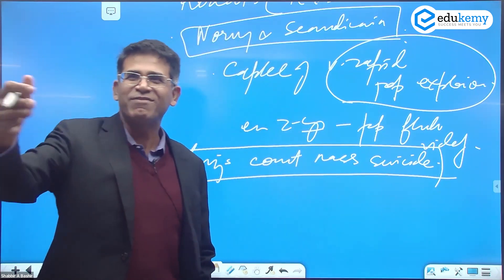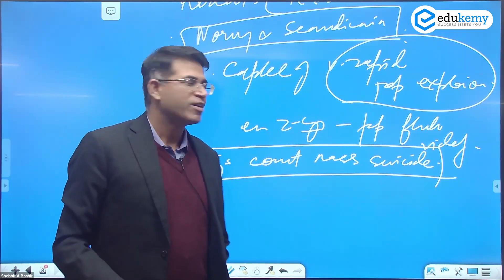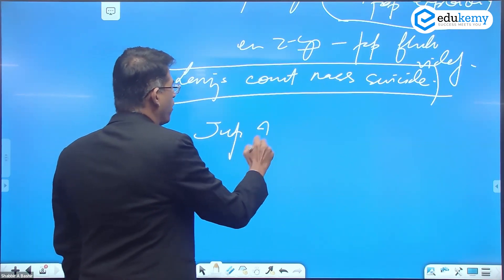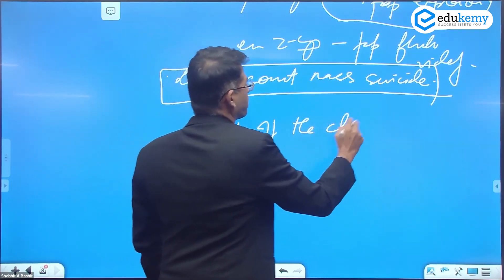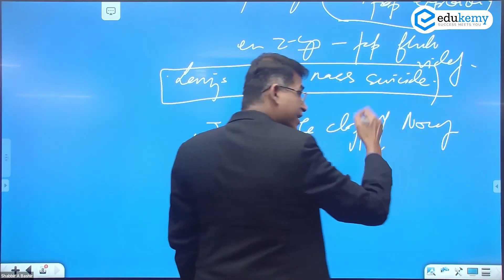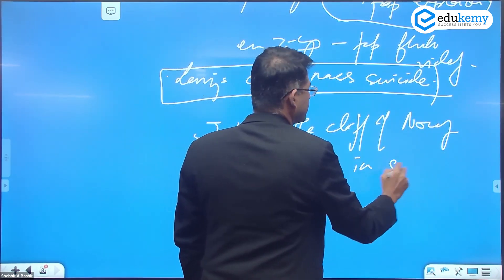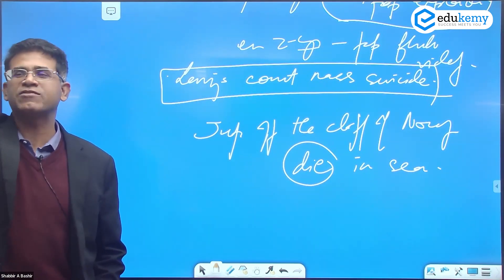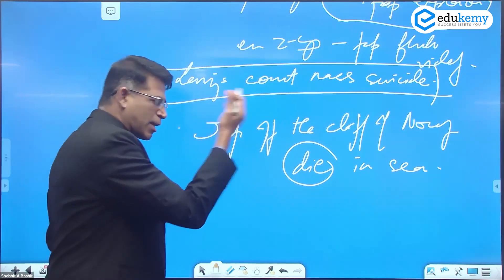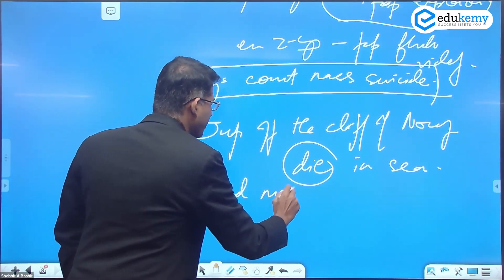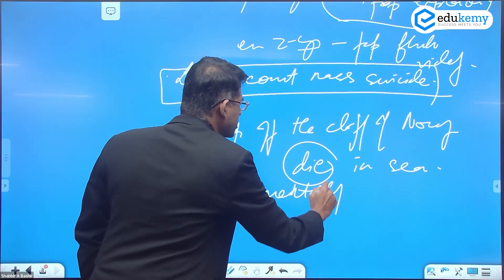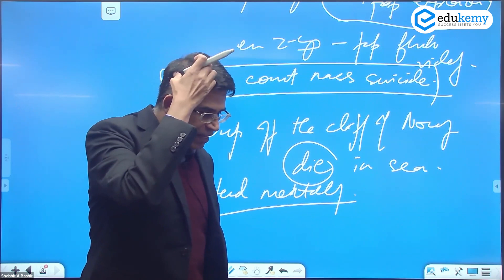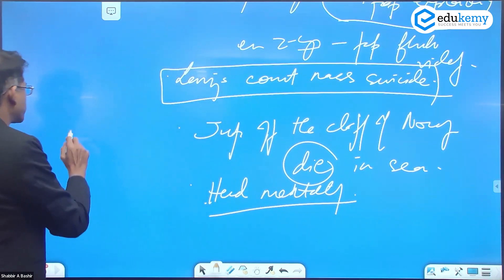I am sure they have councils and meetings. Lemmings, what they do is, they jump off the cliff of Norway and they die in the sea, in the Atlantic Ocean. Every two, three years, their numbers start fluctuating. See this as a typical herd mentality. In fact, it's part of English vocabulary also. A book called the Marching Morons.